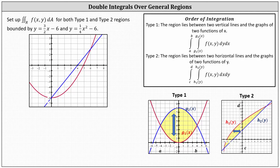Set up the double integral over the region R of f(x, y) dA for both type 1 and type 2 regions, bounded by y equals 3/2 x minus 6 and y equals 1/4 x squared minus 6, which indicates the region R is the bounded region below.